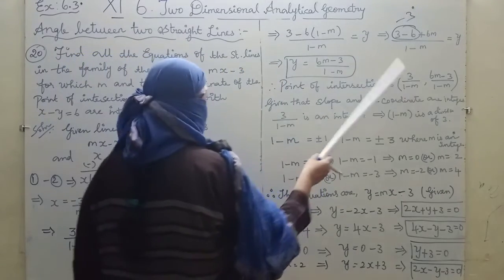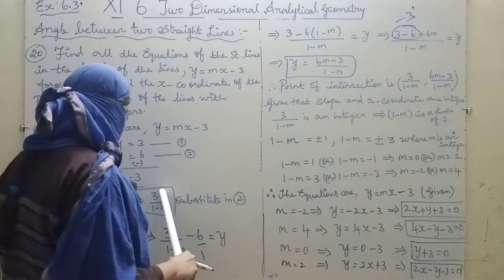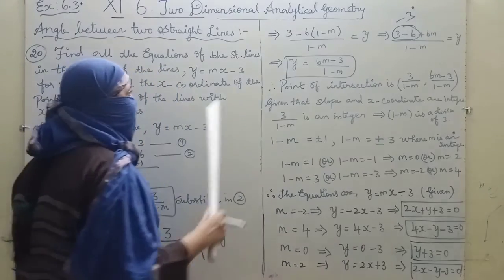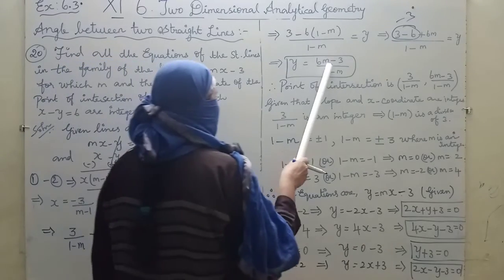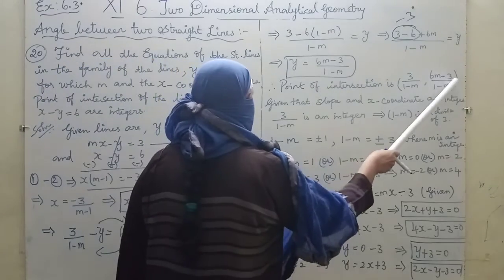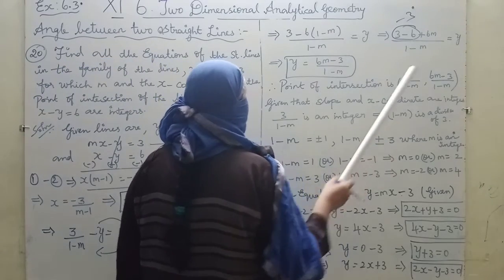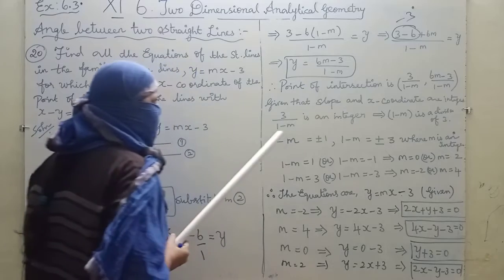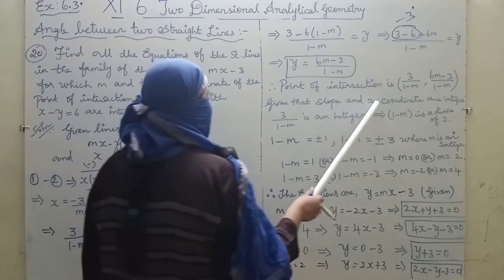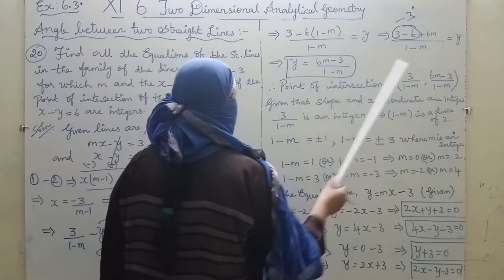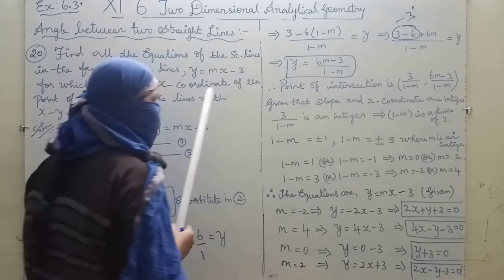So the point of intersection has x-coordinate = 3/(1 - m) and y-coordinate = (6m - 3)/(1 - m). Given that the slope m and x-coordinate are integers.